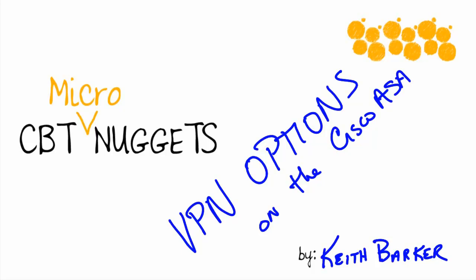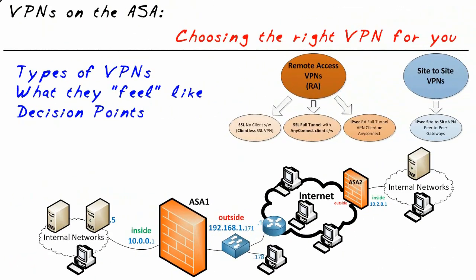Virtual private network options on the Cisco ASA — what exactly are our options? What type of VPNs can we implement on the ASA? That's what this micro nugget is all about. Virtual private networks are pretty darn cool, and the Cisco ASA supports a lot of different flavors of VPNs. We're going to talk about what exactly the options for VPNs are.